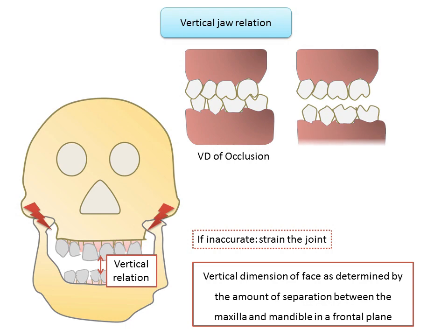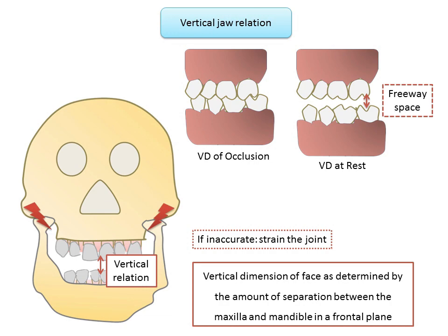Vertical dimension of rest is the length of the face when the mandible is in rest position — the position of the mandible in relation to the maxilla when the maxillofacial musculature is in a state of tonic equilibrium. The difference between VDR and VDO is known as the freeway space; that is, vertical dimension at rest equals vertical dimension at occlusion plus the freeway space.